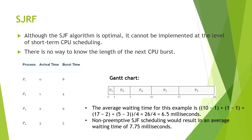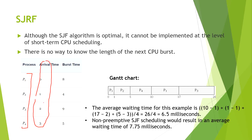Now let's say the processes are coming at different arrival times. The arrival times for process 1, process 2, process 3, and process 4 are given. At each instant, the CPU scheduler will check which process is having the lowest remaining burst time. At the first instant — at 0 seconds — only one process is available.